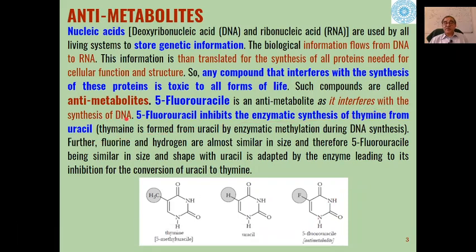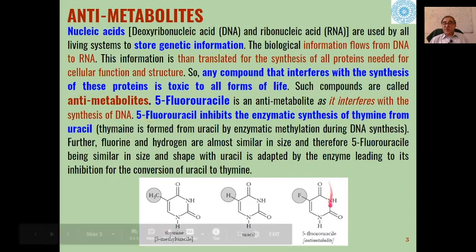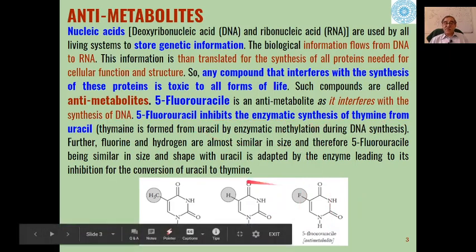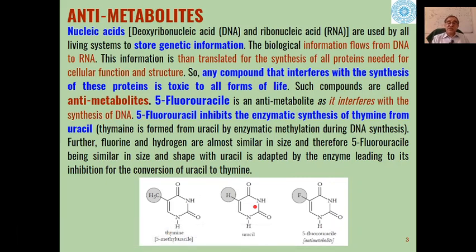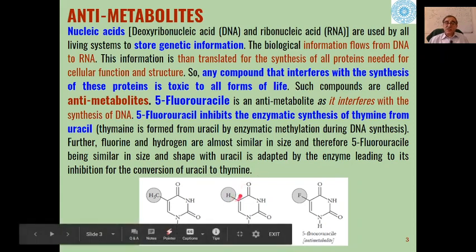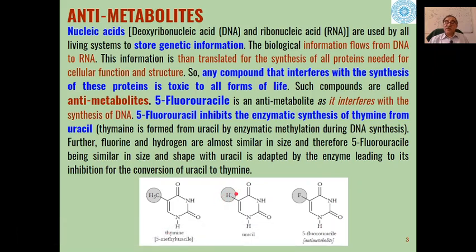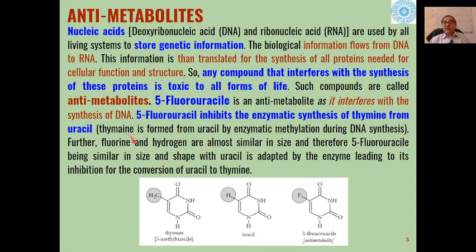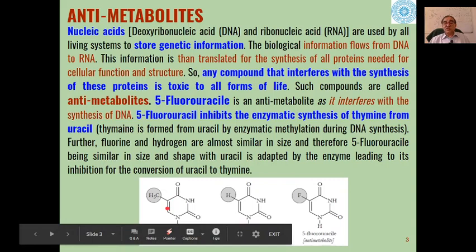5-Fluorouracil inhibits the enzymatic synthesis of thymine. Uracil is converted into thymine by enzymatic methylation during DNA synthesis — the only difference is that uracil has hydrogen and thymine has a methyl group. So methylation at that position leads to formation of thymine, but if we add 5-fluorouracil, conversion of uracil into thymine will be inhibited.